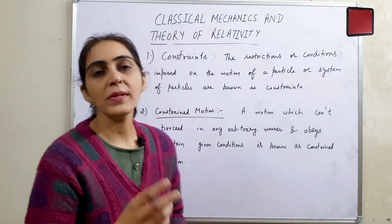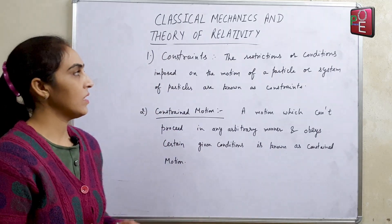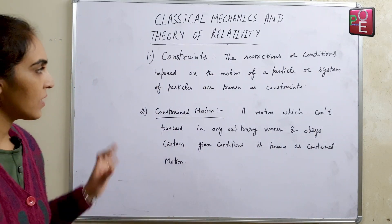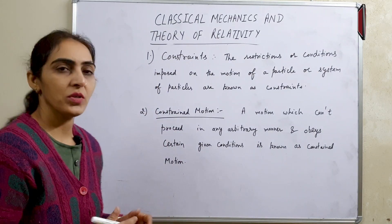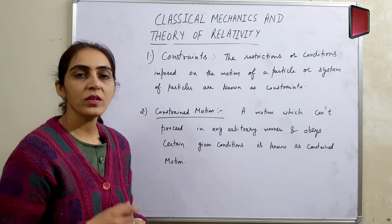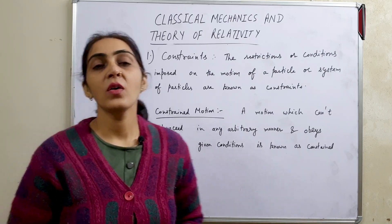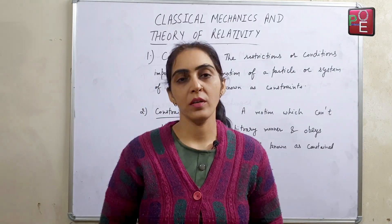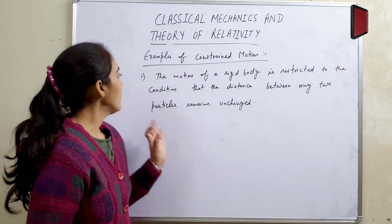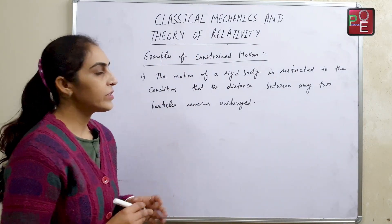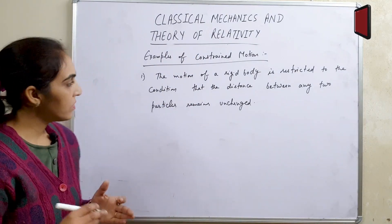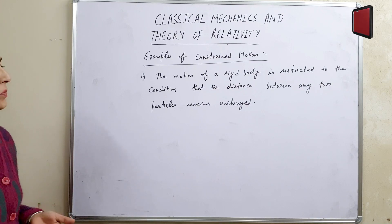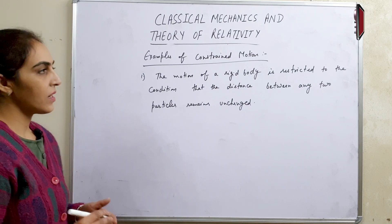Constraints के examples में पहला example है rigid body का। The motion of a rigid body is restricted to the condition that the distance between any two particles remains unchanged.